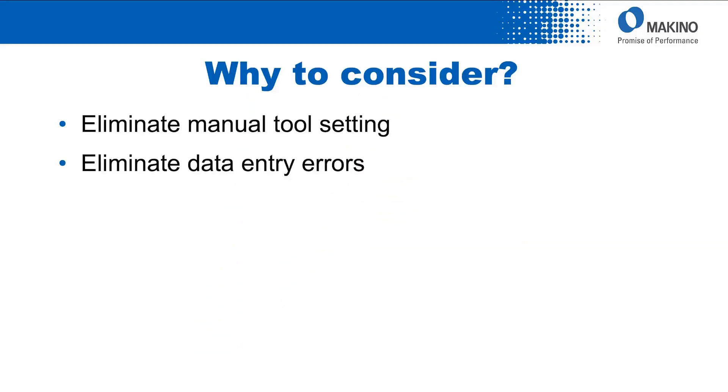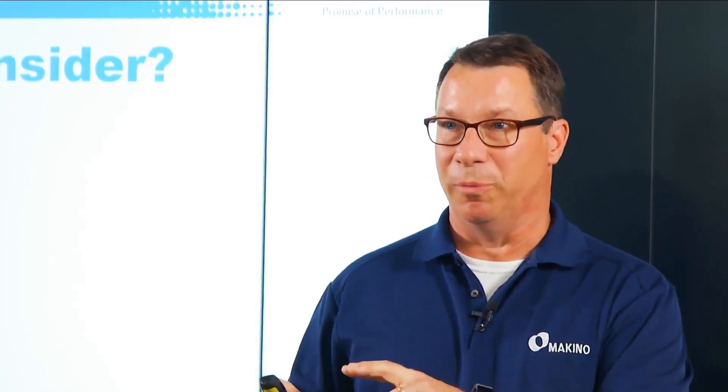It eliminates data entry errors. Think about, for example, you check the tool offline — it's 320 millimeters long. You bring it over to the machine and, instead of 320, you get momentarily distracted and type in 230 millimeters instead. You've got a 90 millimeter mismatch. In this particular case, the first time you use that tool, it's probably going to go 90 millimeters too close to the part relative to where you want it to be. The in-machine tool measurement capability would eliminate that possibility.